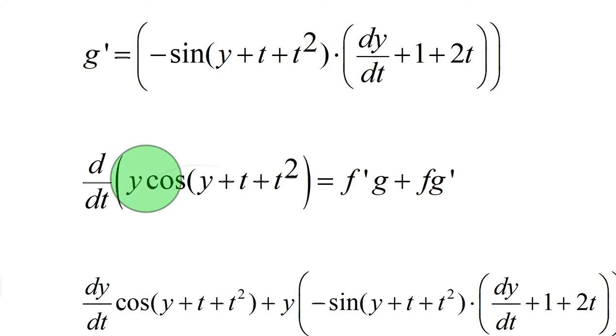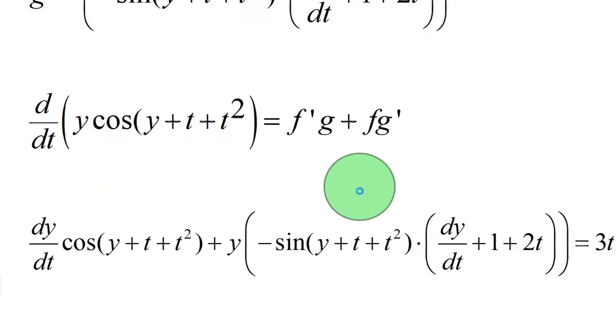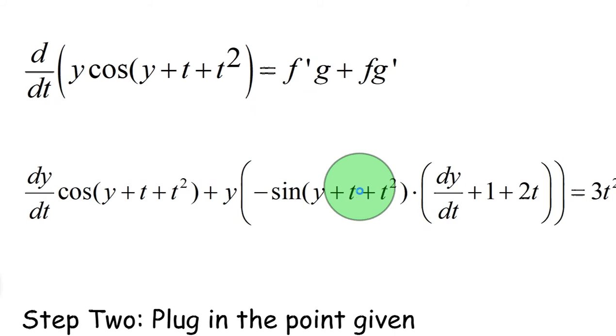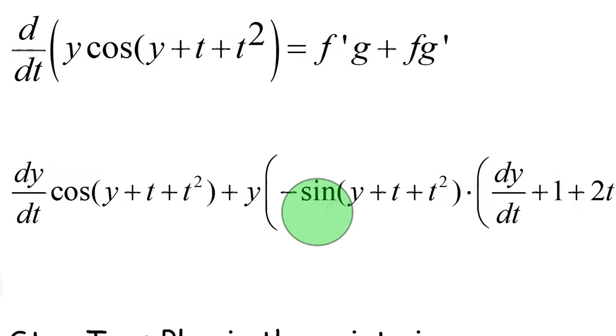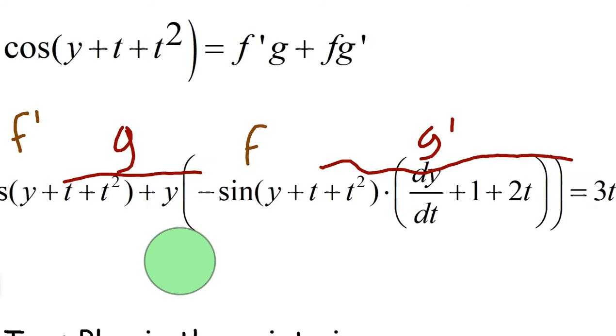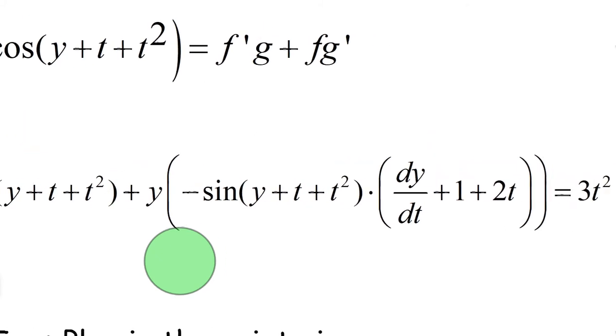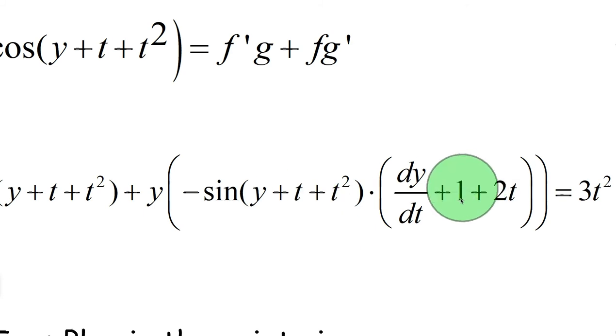So now that we've done f prime, g, f, g prime – here's our f, here's our g – we can use product rule and just plug all that stuff in that we just figured out. So it will be f prime g. In fact, I should label this so you know what's going on here. So here's f prime, here's g, plus f, and then what we just figured out, which is g prime. So all of this right here is g prime, what we just figured out. And that's equal to the derivative of t cubed, which is 3t squared.